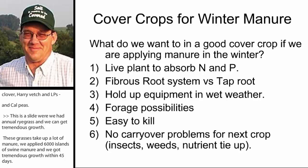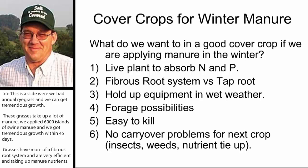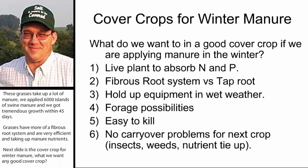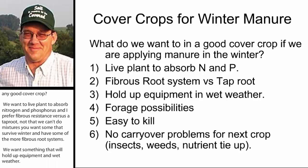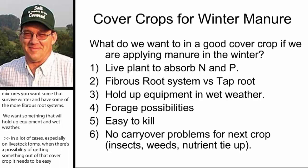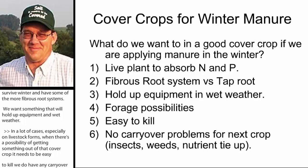For cover crops for winter manure application, what do we want? We want a live plant to absorb both nitrogen and phosphorus. I prefer fibrous root systems versus a tap root. You want to make sure some will survive that winter with fibrous root systems. We want something that will hold up equipment in wet weather. On livestock farms there are forage possibilities. It needs to be easy to kill, and we don't want too many carryover problems for the next crop — with insects, weeds, or tying up nutrients too long. If those grasses grow too long in the spring, we can get allelopathic effects or they'll tie up nitrogen and won't make it available to the next crop if the carbon-to-nitrogen ratio gets too high.